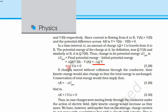Since delta q = I·delta t and V = Va minus Vb, we get delta U = minus I·V·delta t. This change in potential energy is less than zero — it is negative.